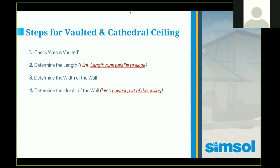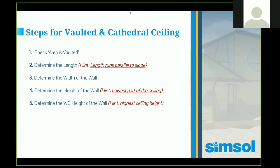The next step is to determine the VC height — that means vaulted and cathedral. That's the highest point of the ceiling altogether. The hint is: what is the highest ceiling height? That will be H2, and let's say that will be twelve.